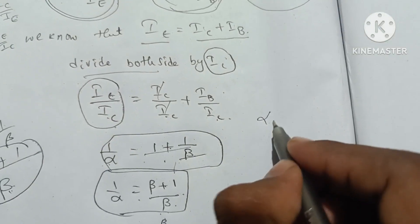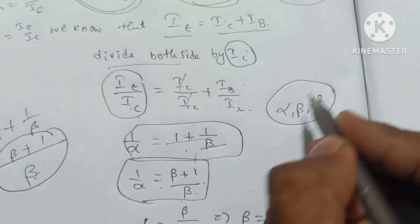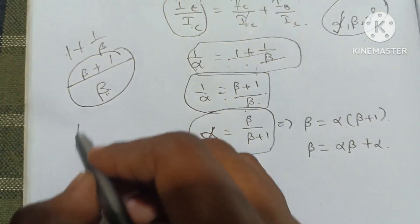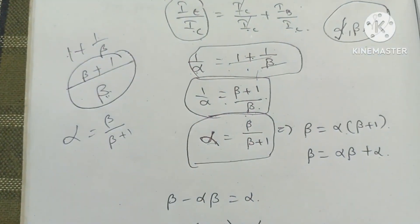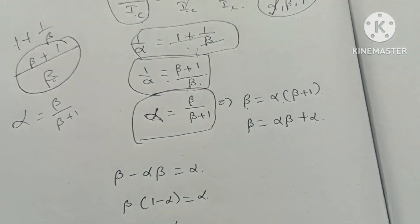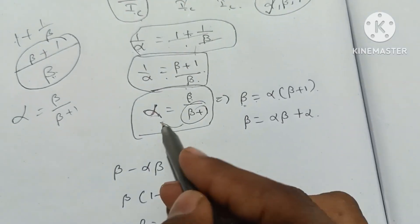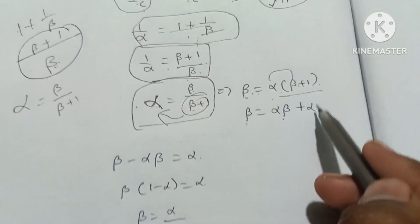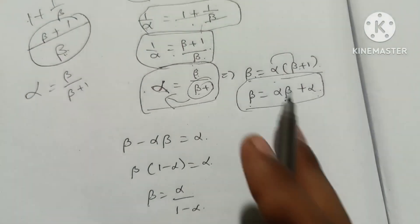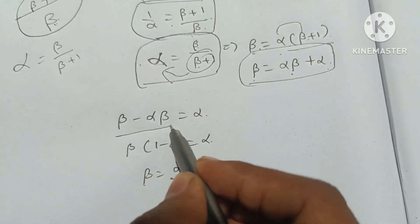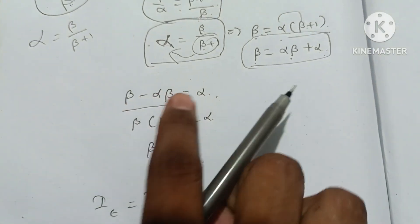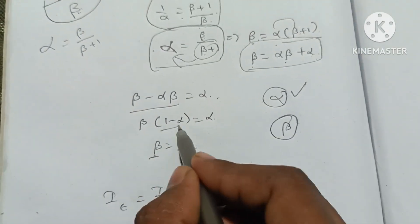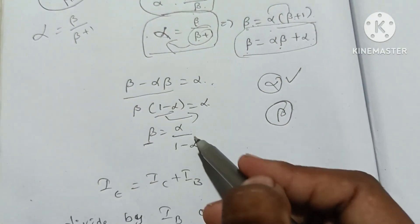So alpha is equal to the reciprocal: beta by beta plus 1. To find beta in terms of alpha: alpha into beta plus 1 equals beta, giving alpha beta plus alpha equals beta. Rearranging, beta minus alpha beta equals alpha, so beta times 1 minus alpha equals alpha. Therefore beta is equal to alpha by 1 minus alpha.